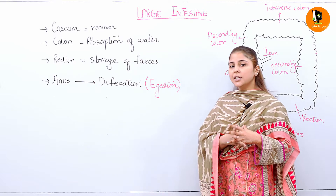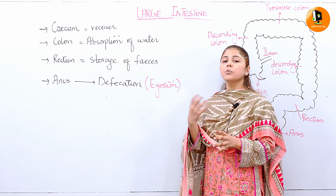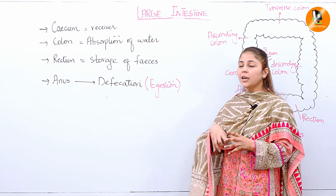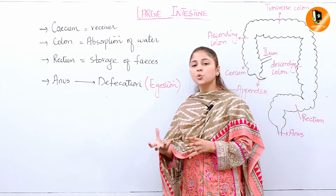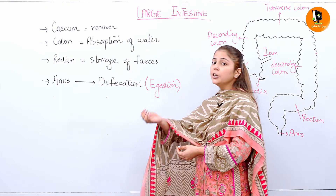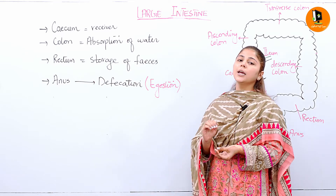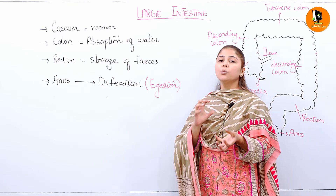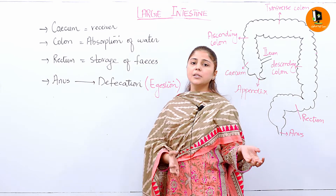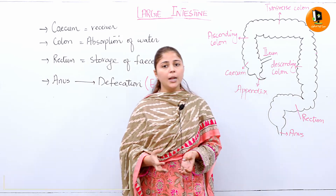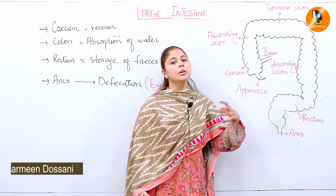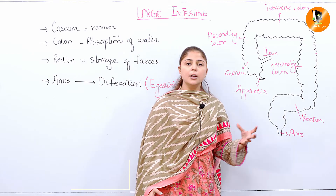The undigested food — jahaan par wo absorption of water start kar denge. And after absorbing that water, they will form that stool in the form of solid. Jab water ki absorption yahaan par ho gayi hai, then that water will directly pass to the kidneys. If the body requires it, that water will be used; otherwise it will move into the kidneys.